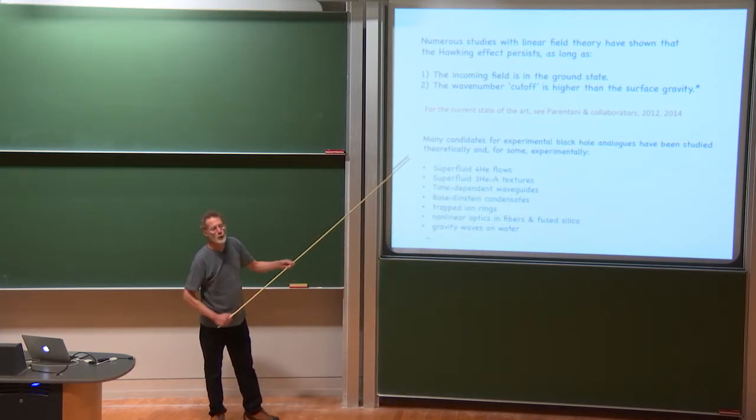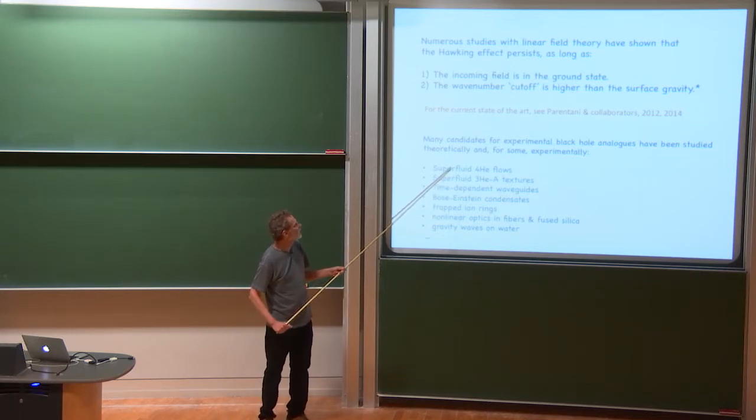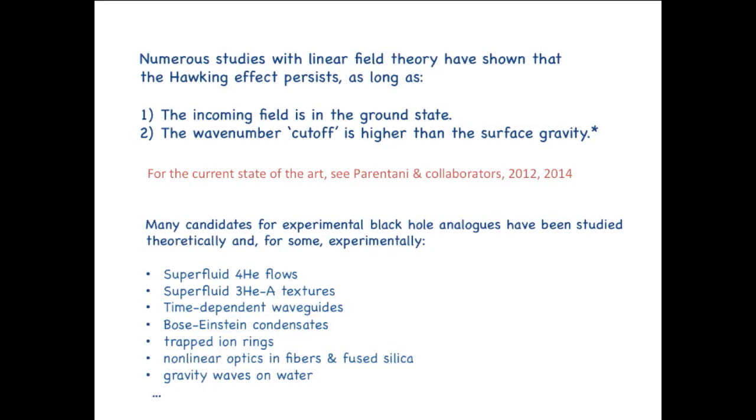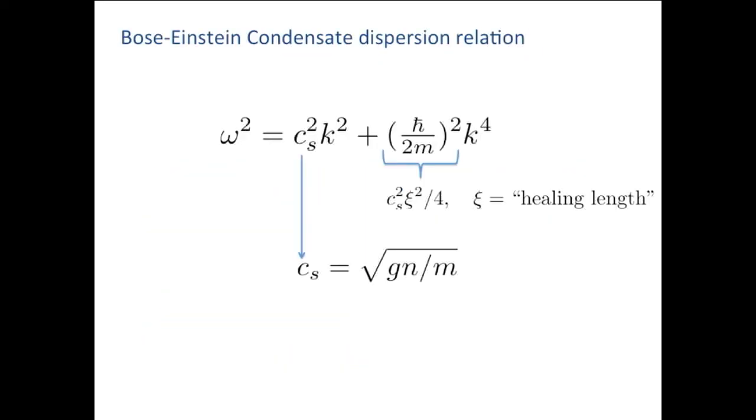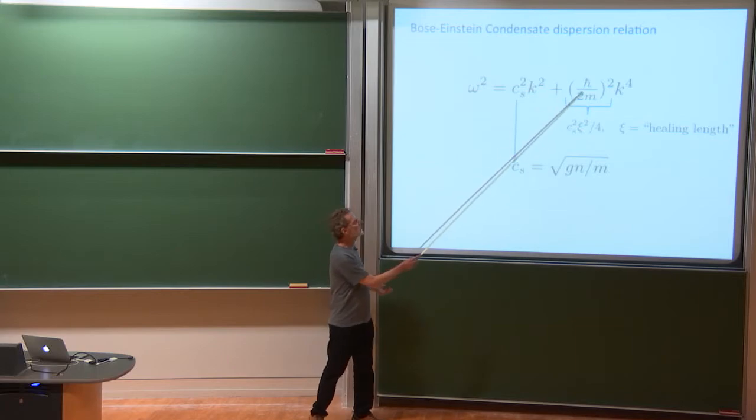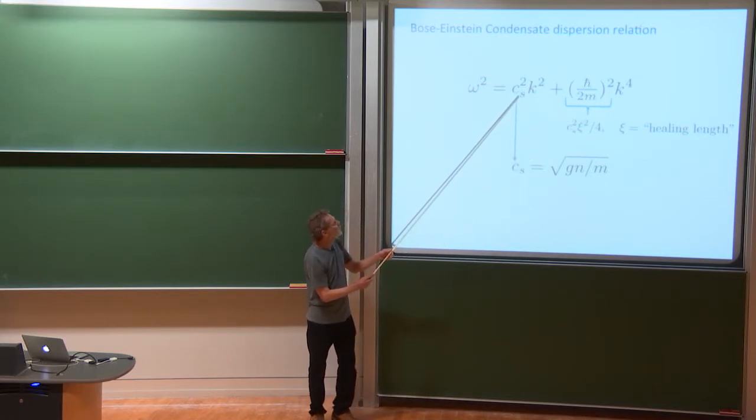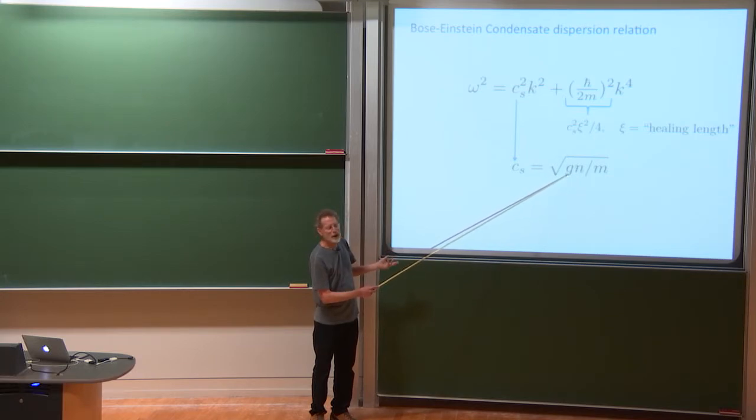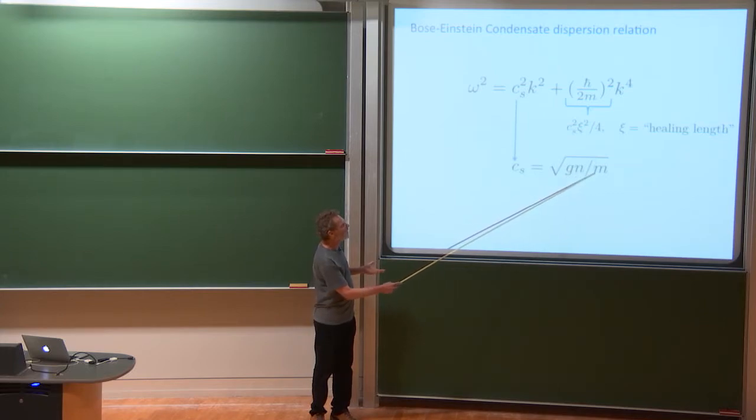So many candidates for actual experimental systems like this have been considered. I don't want to spend time reading the list, but I will focus on the Bose-Einstein example. So a Bose-Einstein condensate has a dispersion relation like this. At small enough wave vector, all we have is the first term. Higher wave vectors, we have this term. This is just linear with a speed of sound, CS, determined by the density of the condensate, a coupling constant that's determined by the scattering length and the mass, and the mass of the atoms.